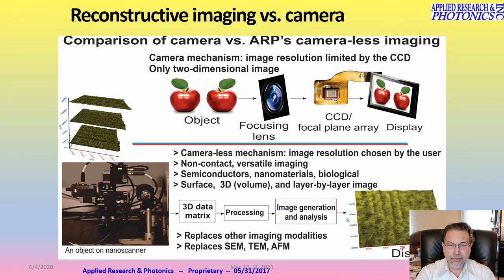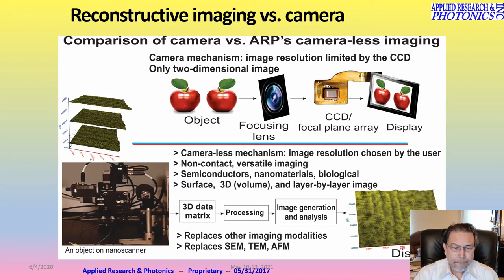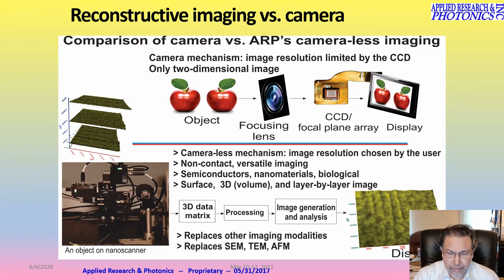The concept distinguishes between camera-less and camera-based mechanisms. In a regular camera, a focusing lens and a CCD or focal plane array give out a signal processed by an ASIC to generate an image. In the camera-less case, we have a nanoscanner that digitizes an object in 3D dimensions chosen by the user's resolution and area. This gives us a 3D reflection matrix, which is then passed through a computer algorithm to generate the image.